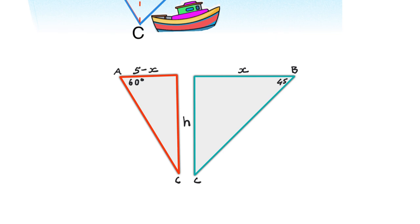So using trigonometry we can utilize this side five minus X and the side H for the red triangle, and we can utilize X in the green triangle with H. These sides are both adjacent and opposite. Five minus X is the adjacent side and so is X. H is the opposite side in both triangles.